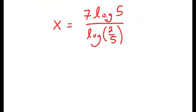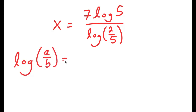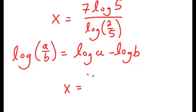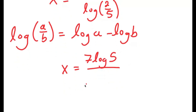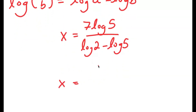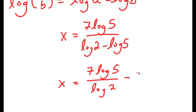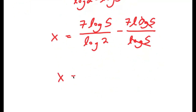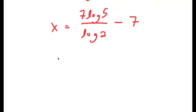We have our answer, but there is a way to simplify it further. If I have something in the form log a over b, this is equal to log a minus log b. So log of 2 over 5 equals log 2 minus log 5. Substituting and simplifying — the log 5 terms cancel — I get 7 times log 5 over log 2 minus log 5, which is the same as 7 times log base 2 of 5, minus 7.